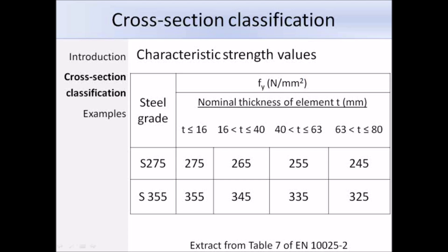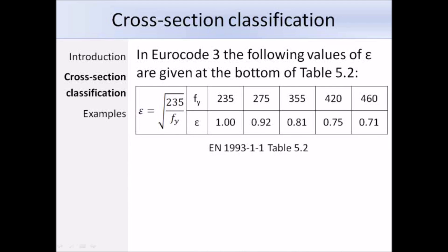Just like table 3.1, the strength values depend on steel grade, production standard, and nominal thickness. Epsilon is calculated as the square root of 235 divided by the yield strength. We can substitute the yield strength value into the equation or simply read epsilon from the bottom of table 5.2 in Eurocode 3, where values have already been calculated for a range of yield strengths.